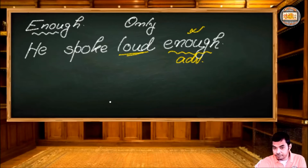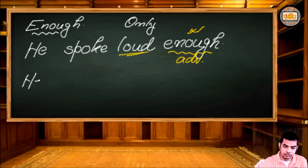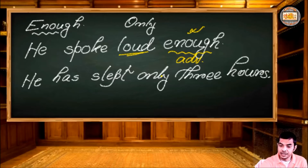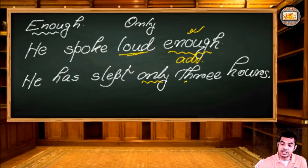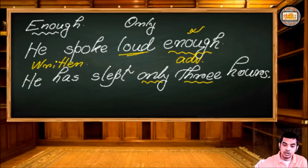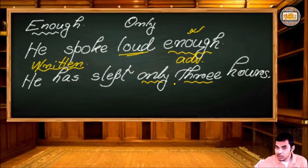Now let's discuss 'only' and where we place it. Consider this sentence: 'He has slept only three hours.' Here, 'only' is placed right before the word it qualifies, which is 'three.' So 'only' modifies 'three' and is placed just before it. This is how it works in written English — 'only' is placed right before the adjective or adverb it qualifies.